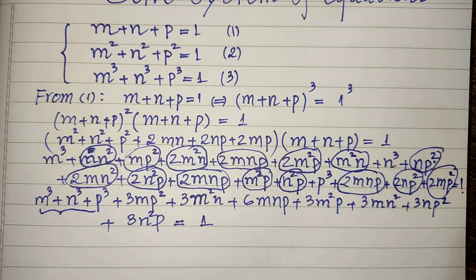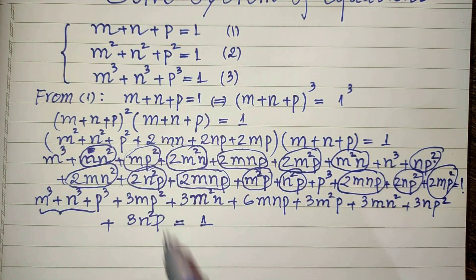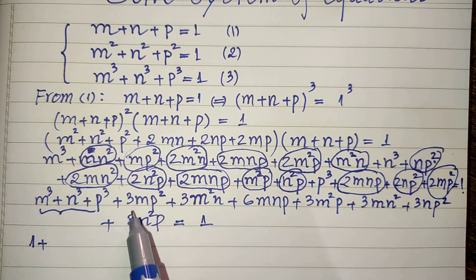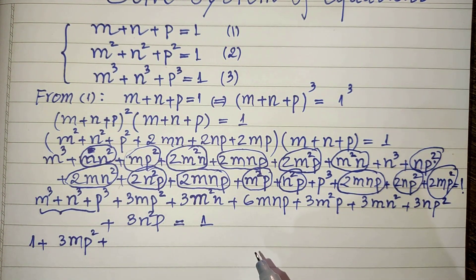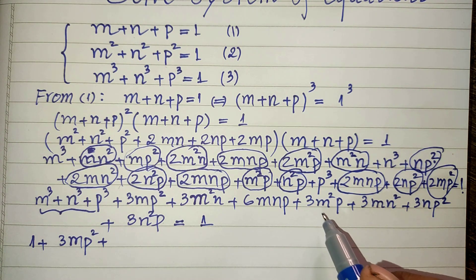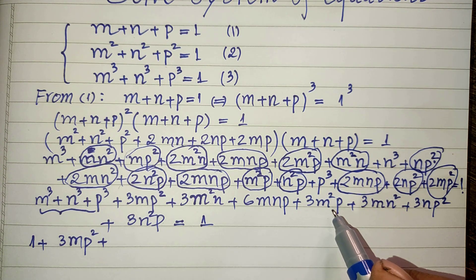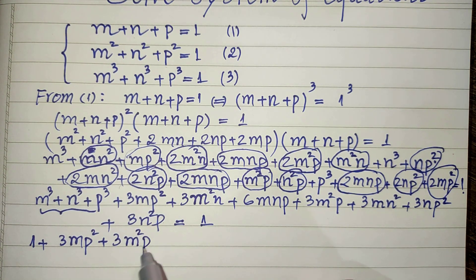Now since m cubed plus n cubed plus p cubed equals 1 from our third equation, we substitute that in. So we replace m cubed plus n cubed plus p cubed with 1, and we get 1 plus 3mp², plus 3m²p, and the remaining terms.